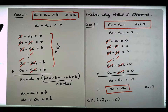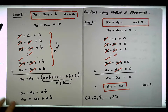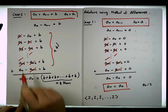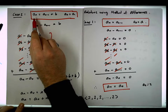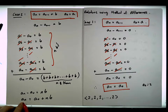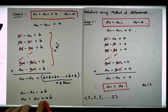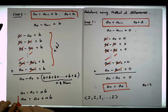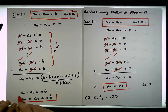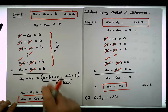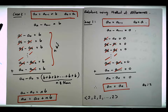What we end up with is the closed form solution: a_n equals a_0 plus n times b. The nth term in the sequence is fully determined by the base case plus n times the constant. This is the closed form solution to this particular recurrence.